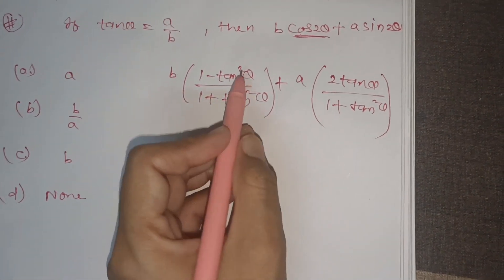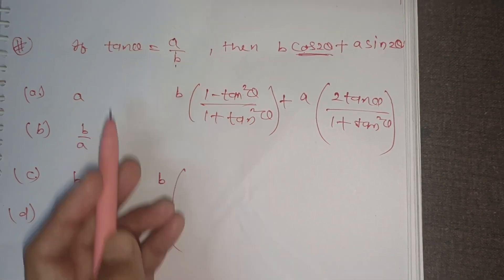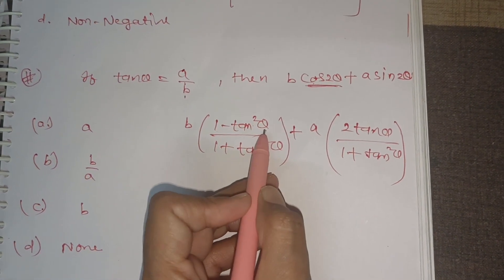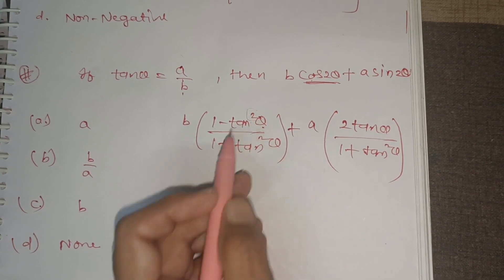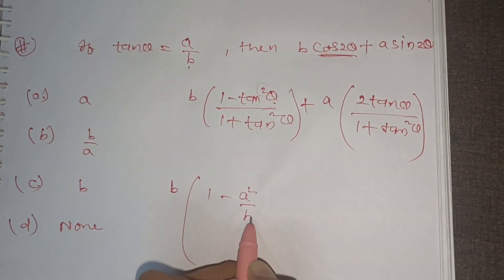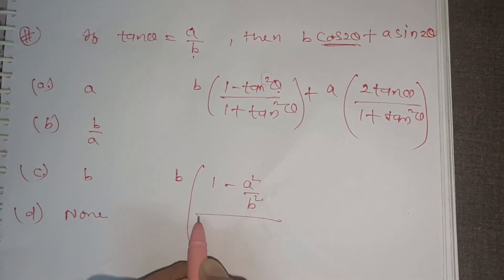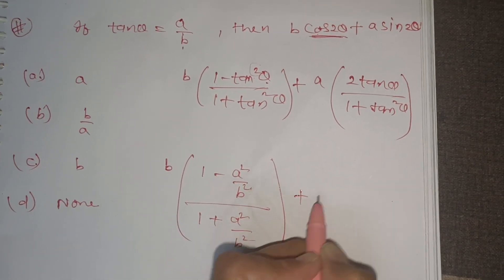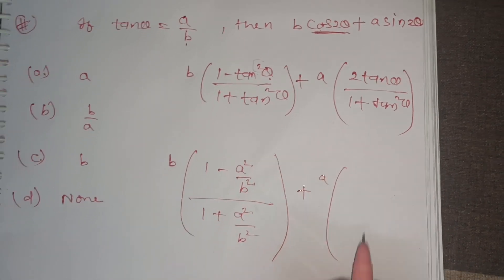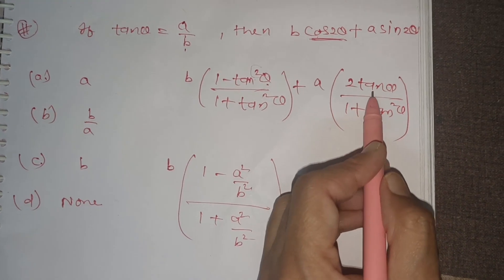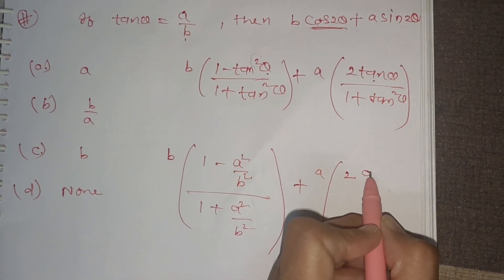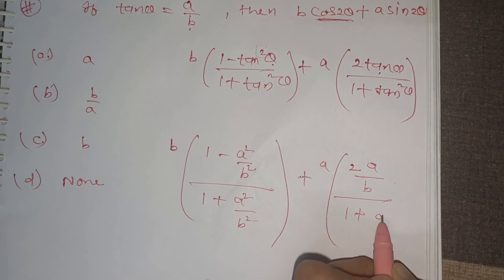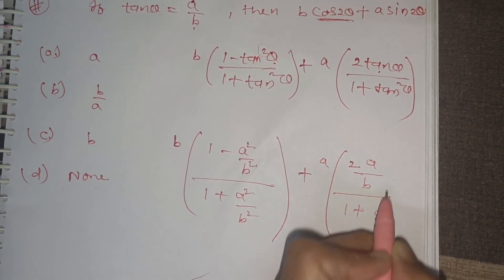For b·cos2θ, putting tanθ = a/b: we get b into (1 - a²/b²)/(1 + a²/b²). For a·sin2θ, putting tanθ = a/b: we get a into 2·(a/b)/(1 + a²/b²), which gives 2a²/b in the numerator.